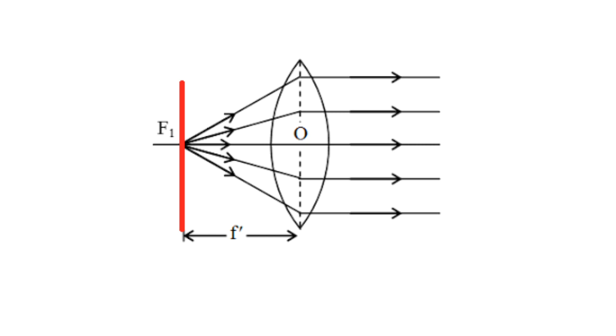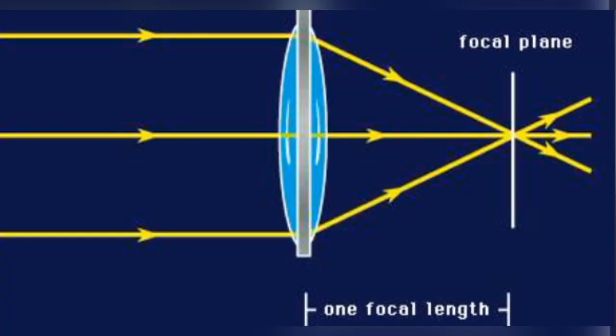Now let's see what a focal plane is. A plane passing through the first focal point and normal to the principle axis of the lens is called the first focal plane. The plane passing through the second focal point and normal to the principle axis of the lens is called the second focal plane.